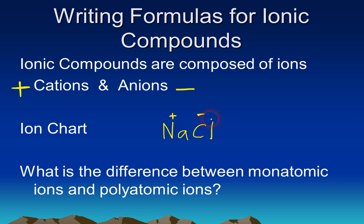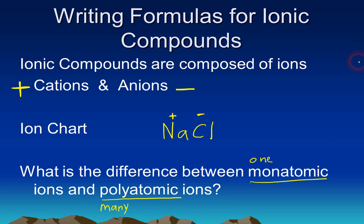On your chart you'll notice a couple of vocabulary words used. We have the word 'monatomic' and we also have 'polyatomic ions.' The prefix mono means one, so any monatomic ion has just one atom in it. On the other hand, the prefix poly means many, so a polyatomic ion will have many atoms — sometimes two, sometimes as many as seven or eight.